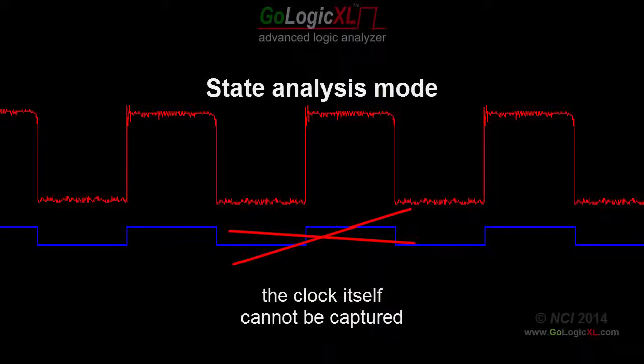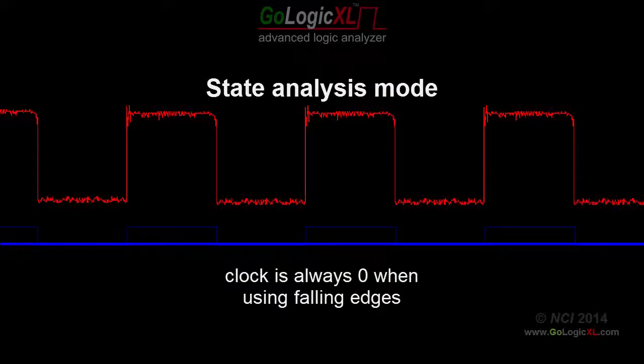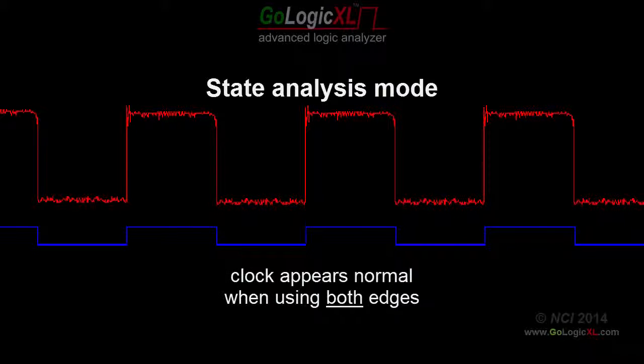A rising edge clock always appears as a logic high in the capture trace data. Likewise, a falling edge clock always appears as a logic low in the capture trace. The clock signal should appear normal in the capture trace if the input signals are latched on both the rising and falling edges.